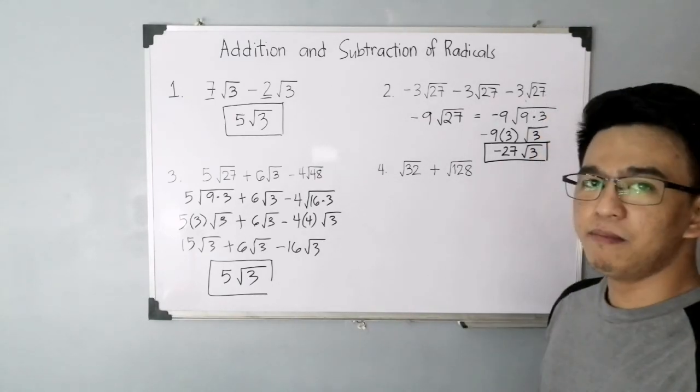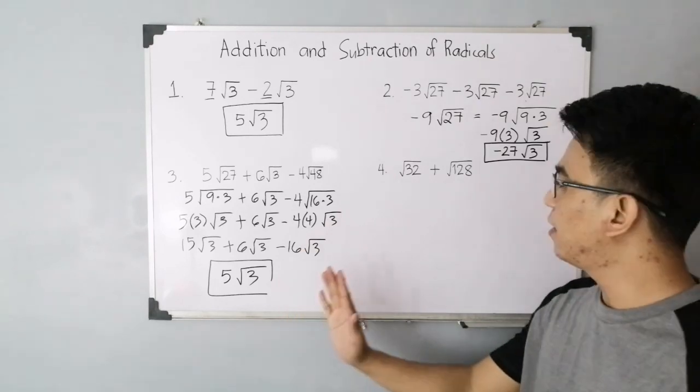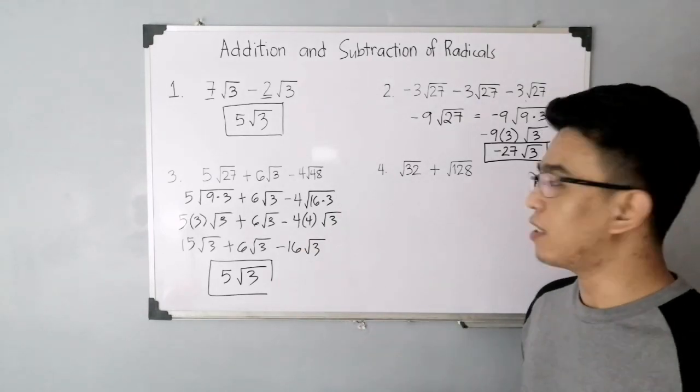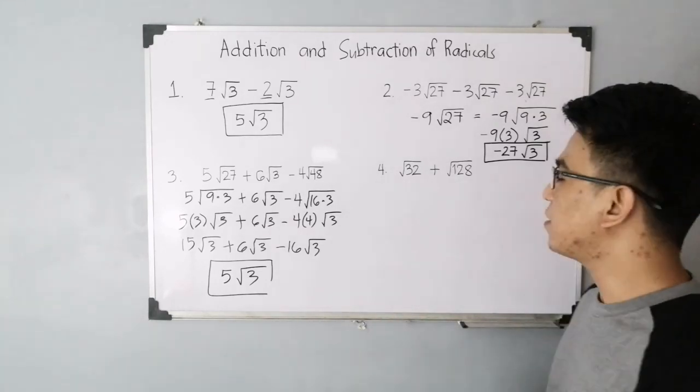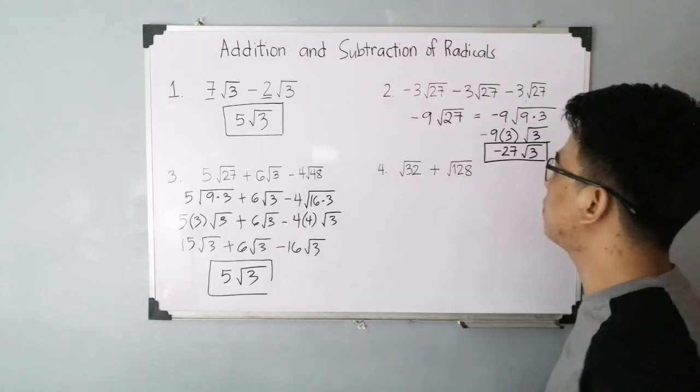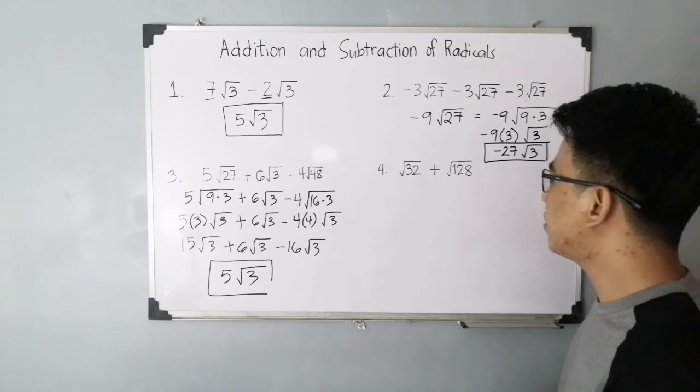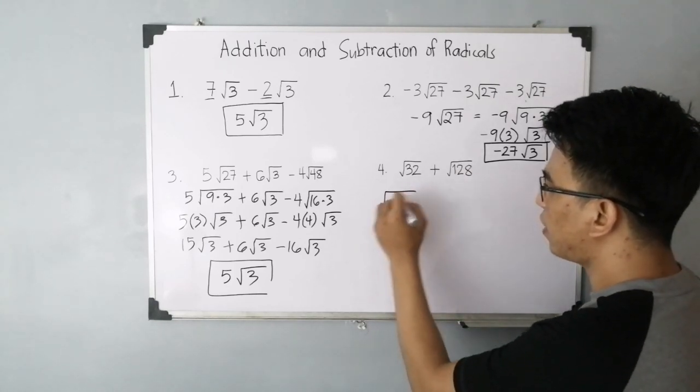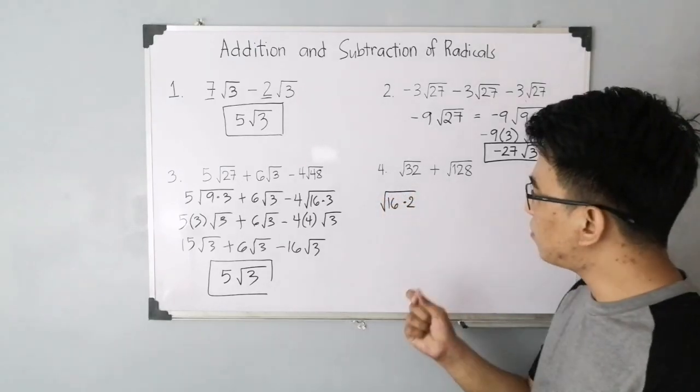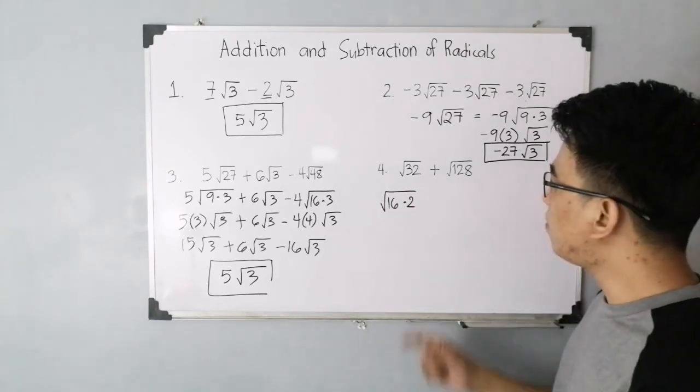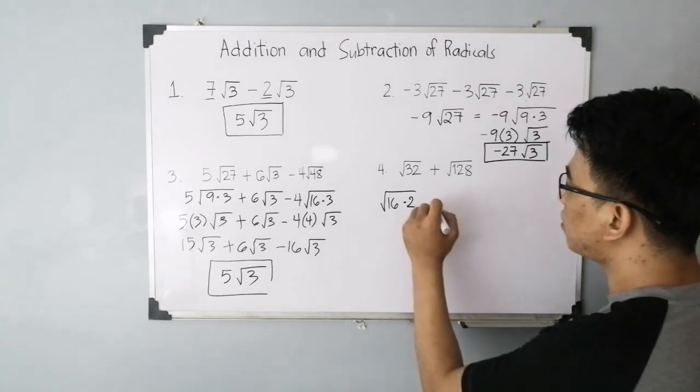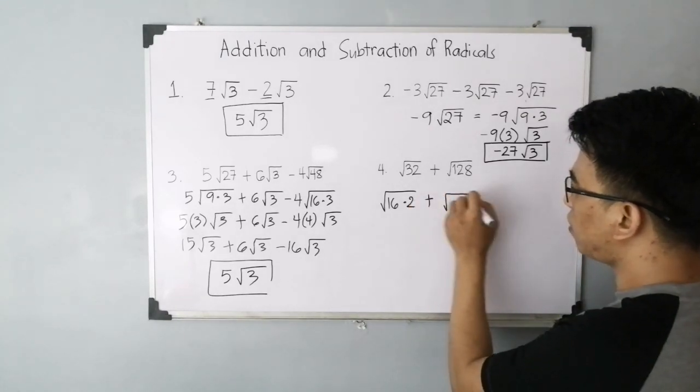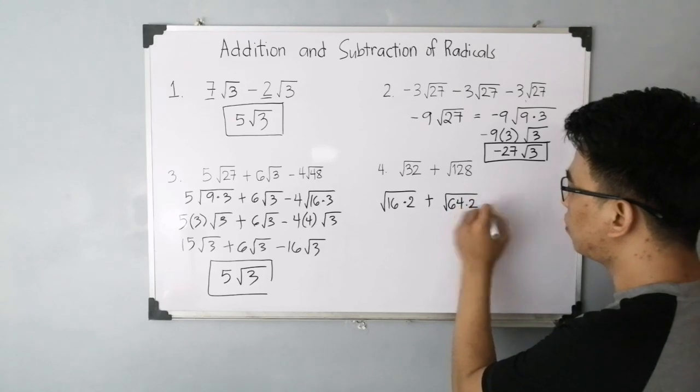And let's move on with item number 4. Item number 4 is the same scenario as number 3. We don't have common radicals, but we can make them common radicals. So square root of 32 and square root of 128. The factors of 32 are square root of 16 times 2. 16 times 2 is 32. Now we have a clue. A possible factor of 128 is 2. So the factors are square root of 64 times 2.